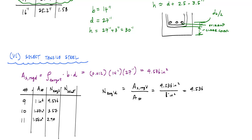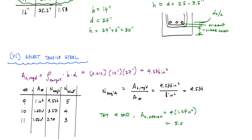Since you can't use fractional bars, we round up: 5 number-9 bars, 4 number-10 bars, or 3 number-11 bars. The more you have to round up, the more conservatism you add. The most economical choice might be 3 #11 bars, but 4 #10 bars and 5 #9 bars both work. We'll choose 4 number-10 bars, giving AS_design = 4 × 1.27 = 5.08 in².